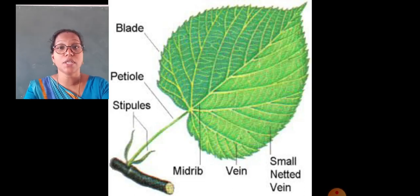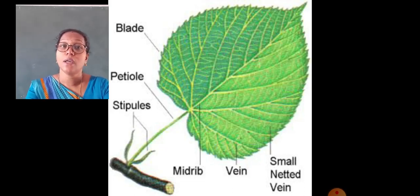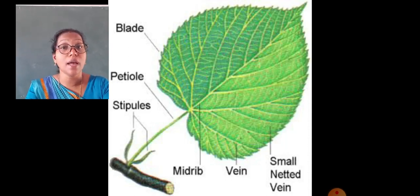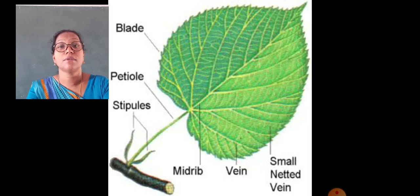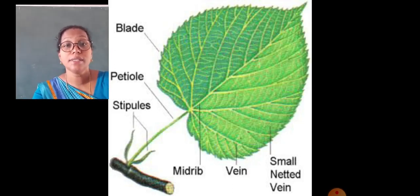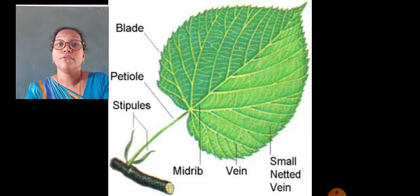Now students, the flat green portion of the leaf is called the leaf blade or lamina. There is an upper part and lower part of the leaf. A big vein running at the middle part of the leaf is called the midrib. The veins carry water and minerals to the leaves from the stem. The midrib is divided into many side veins, and these side veins further divide into small netted veins.